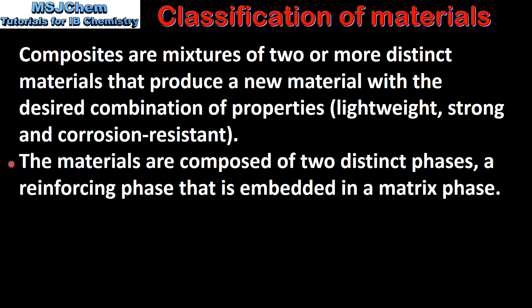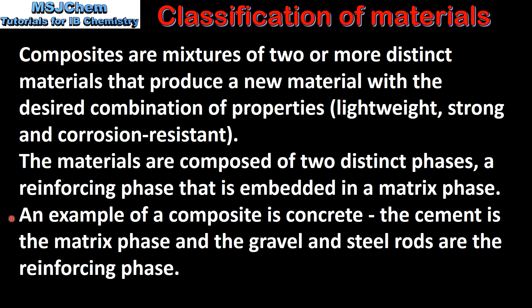The materials in a composite are composed of two distinct phases: a reinforcing phase that is embedded in a matrix phase. An example of a composite is concrete — the cement is the matrix phase and the gravel and steel rods are the reinforcing phase.